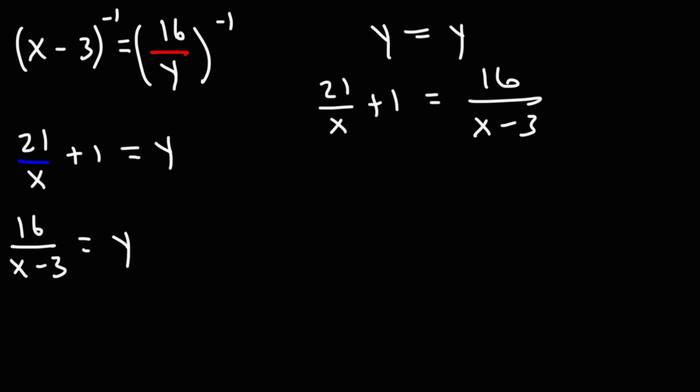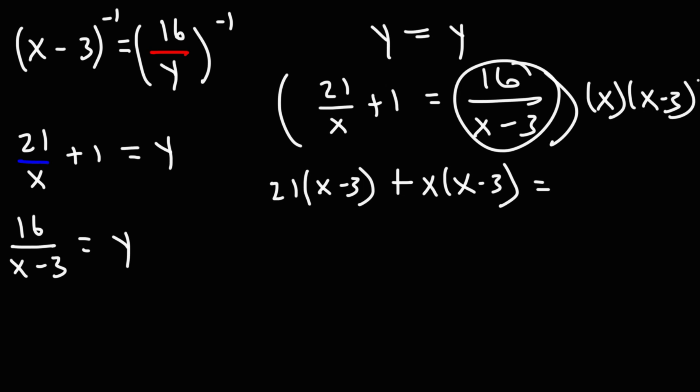To do that, I want to get rid of all of the fractions. So I'm going to multiply every term by x plus 1 and x minus 3. 21 over x plus 1 times x plus 1, the x plus 1 will cancel, and we'll be left with 21 times x minus 3. When I multiply 1 by what we have here, I'm just going to get x plus 1 times x minus 3. 16 over x minus 3 times this, the x minus 3 factors will cancel, leaving us with just 16x.